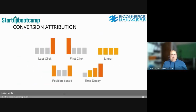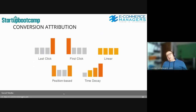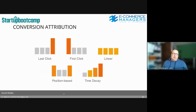Several other attribution models have been developed and you can activate them all in Google Analytics. This matters for social media because social media mostly plays a role at the front end of the customer journey — inspiration, reach, and awareness — things mostly invisible in Google Analytics. But you'll see it indirectly: if you run social media campaigns and observe a large increase in direct traffic and branded search without doing anything else, that was your social media activity.